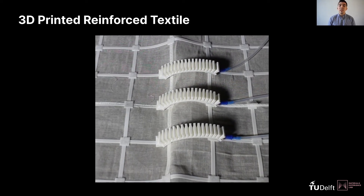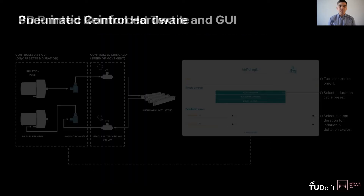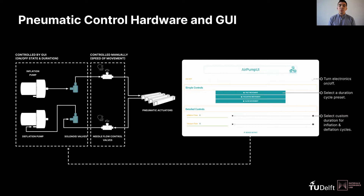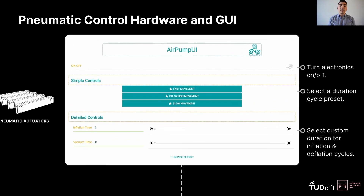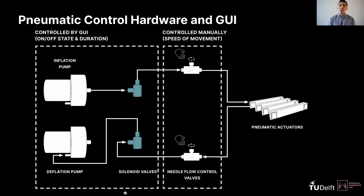When the actuators are inflated, the textile undergoes a shape change depending on the location of the actuators. The accompanying hardware and software support the toolkit by providing off-the-shelf electronic components and a graphical user interface built with Arduino IDE using the plug-in device Druid. Together, they regulate the airflow going into and out of the actuators, thus affecting the shape-changing capabilities. As shown in the image, the GUI gives the user control over the air pump's power state — on and off — and the inflation and deflation duration cycles. In addition, two manual needle flow control valves regulate the airflow rate to the actuators. By manually tuning the needle valves, the user can speed up or slow down the movement of the actuators. By adjusting these parameters and varying the location of the actuators, the designer can experiment with temporal forms ranging from quick movements to slow, growing, light motions.